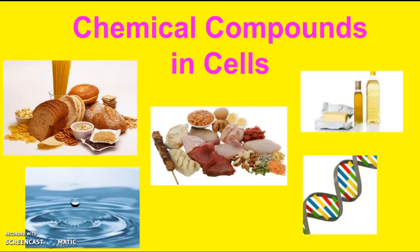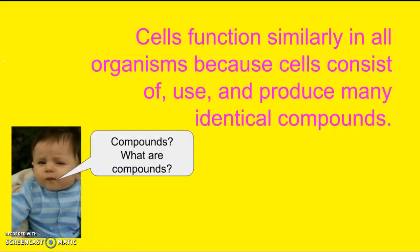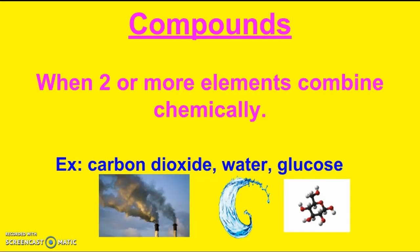Hi, Mrs. Young here, and today we will be talking about chemical compounds in cells. Cells function similarly in all organisms because cells consist of, use, and produce many identical compounds. Compounds are when two or more elements combine chemically. So some examples would be carbon dioxide, water, or glucose.